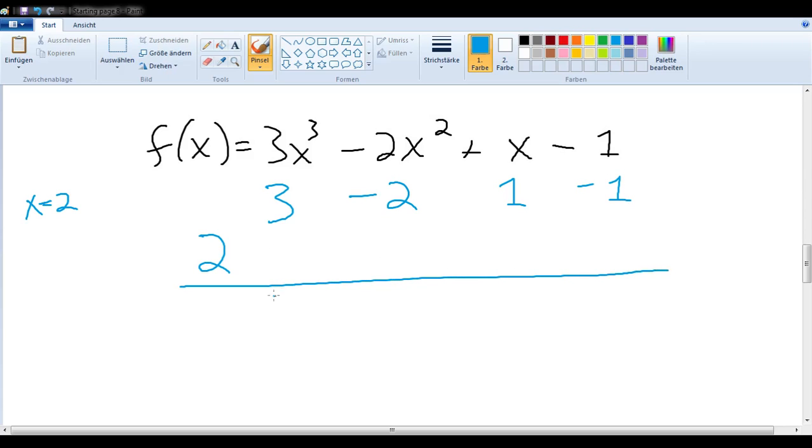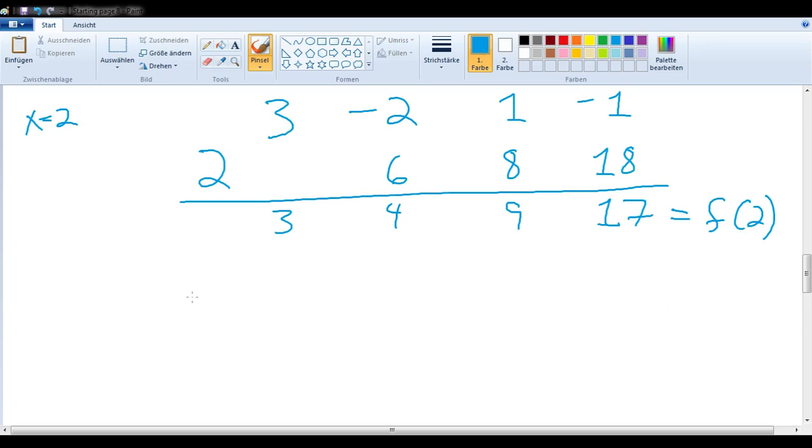So we carry, multiply, add, multiply, add, multiply, and add. So we already have f of 2 is equal to 17. We continue...